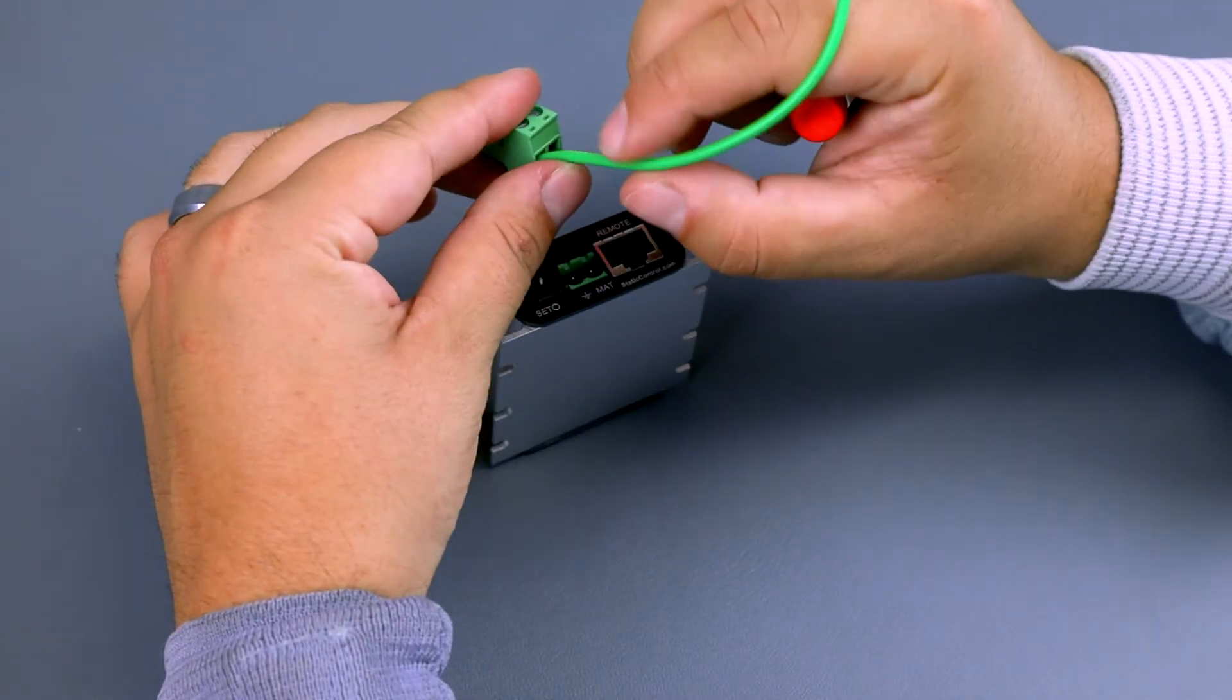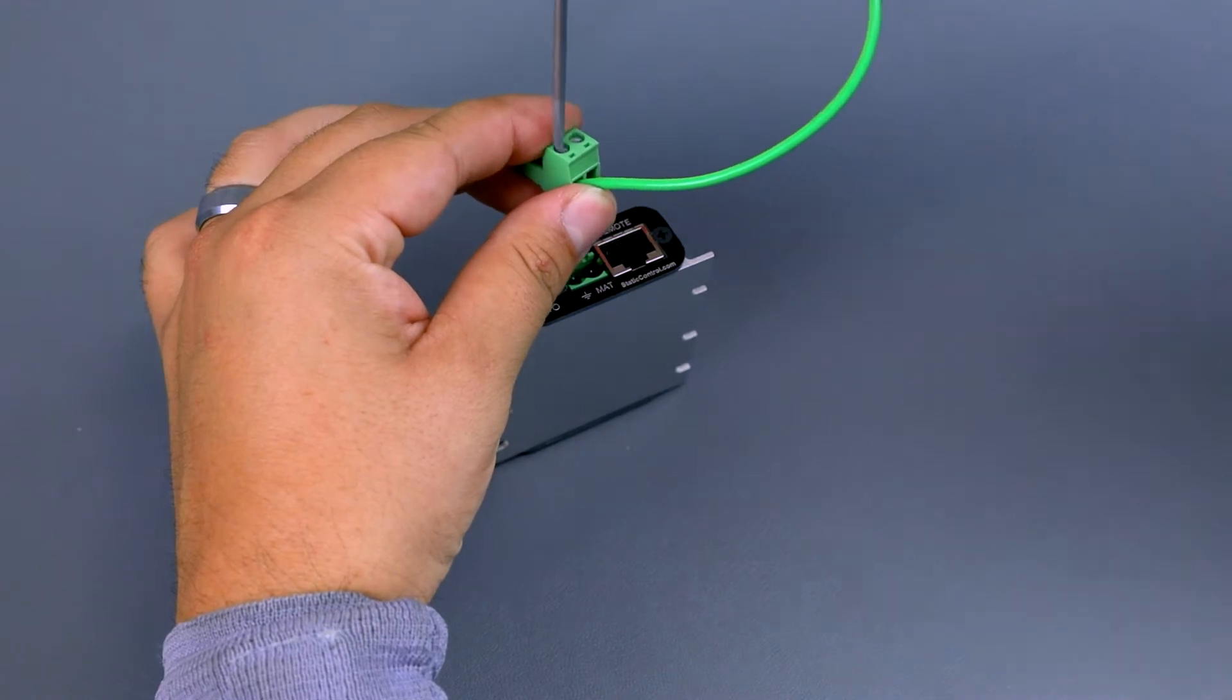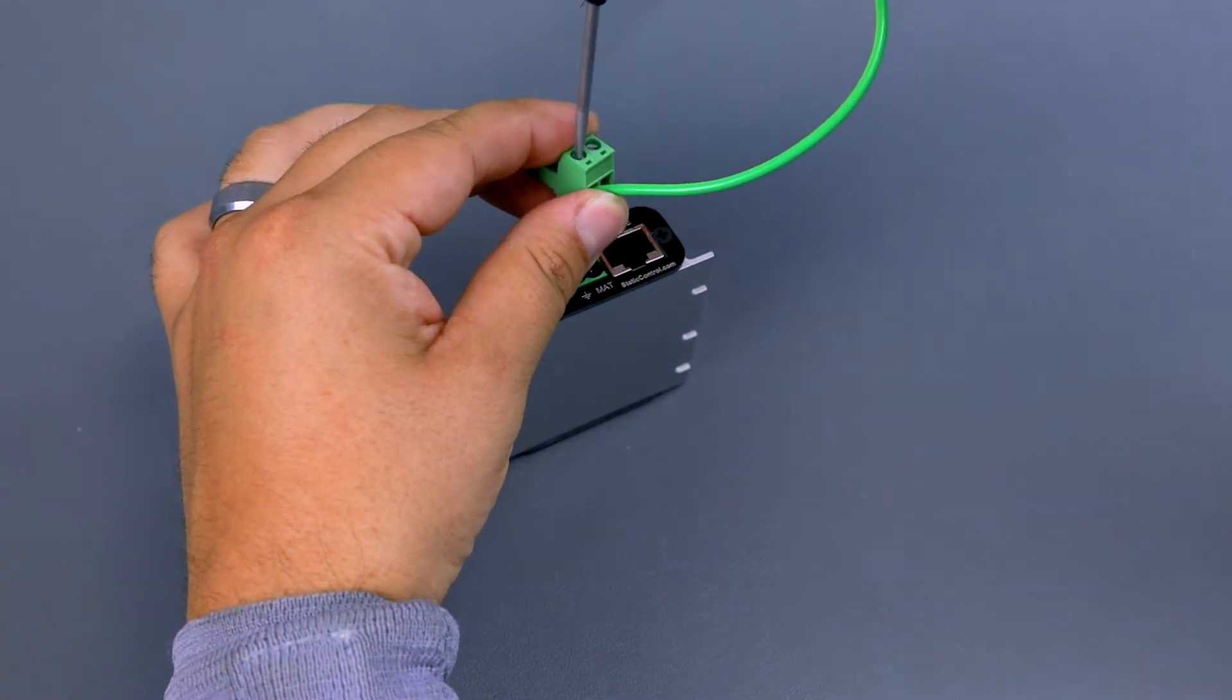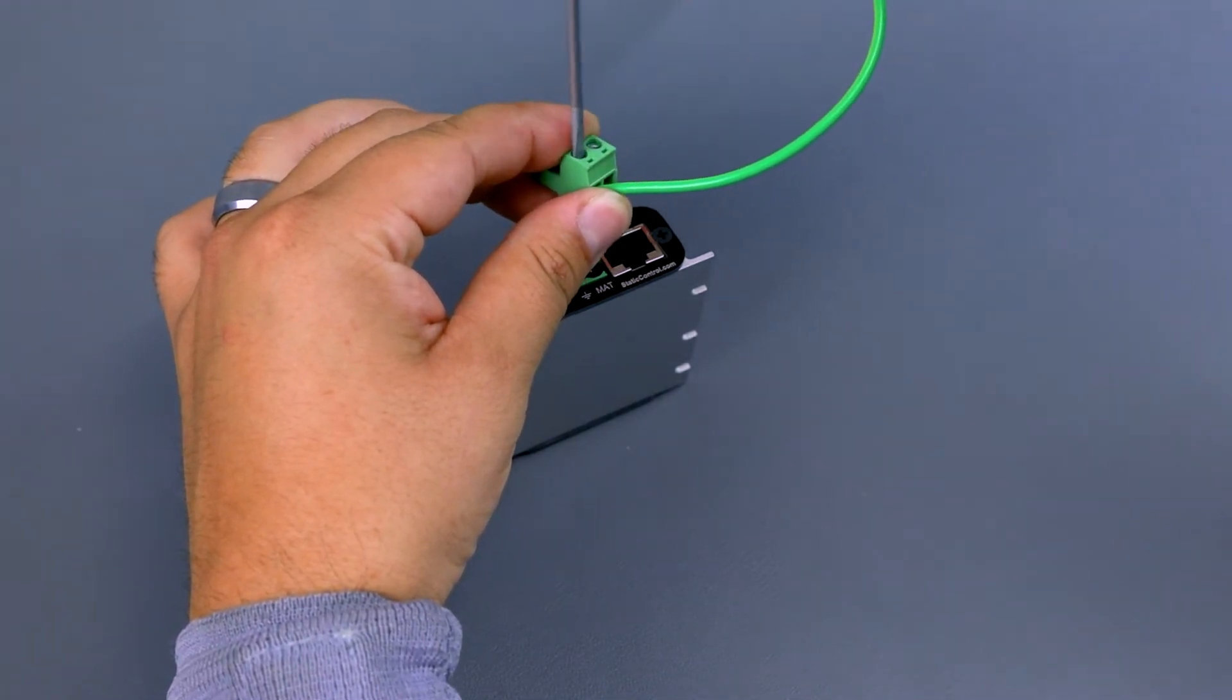Connect the other end of the monitor ground cord to the monitor terminal block, using a small screwdriver to securely connect the tinned end of the cord into the block terminal.